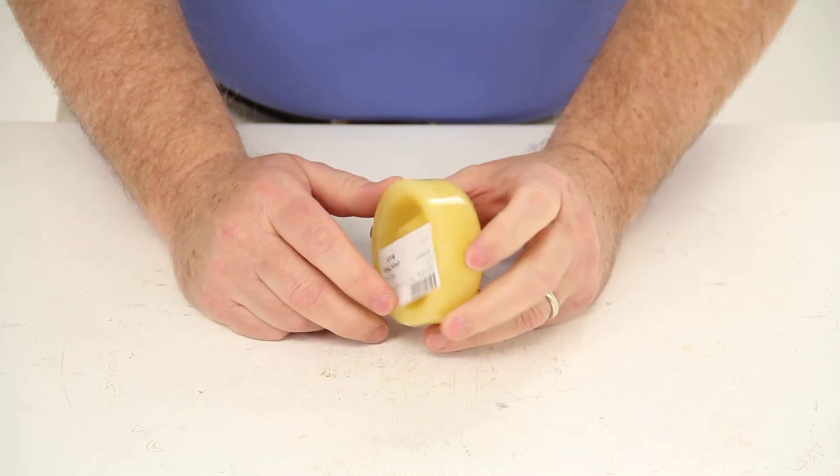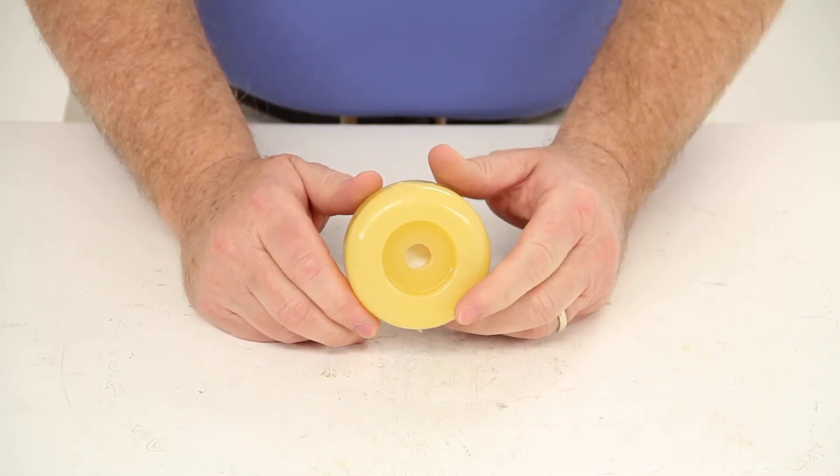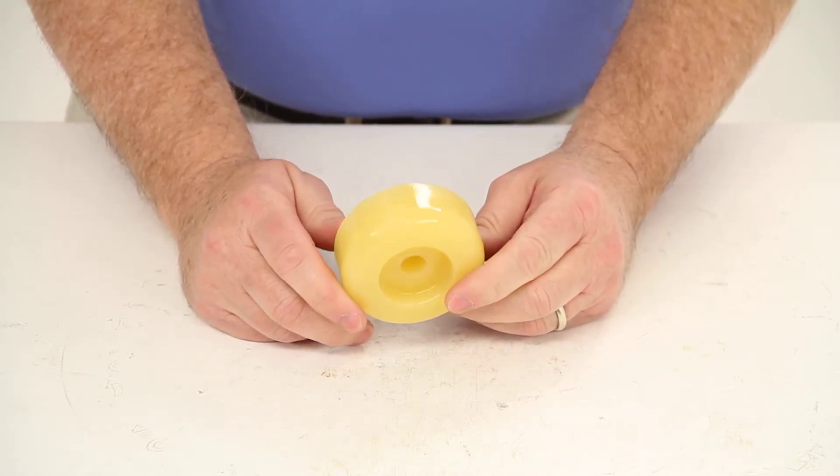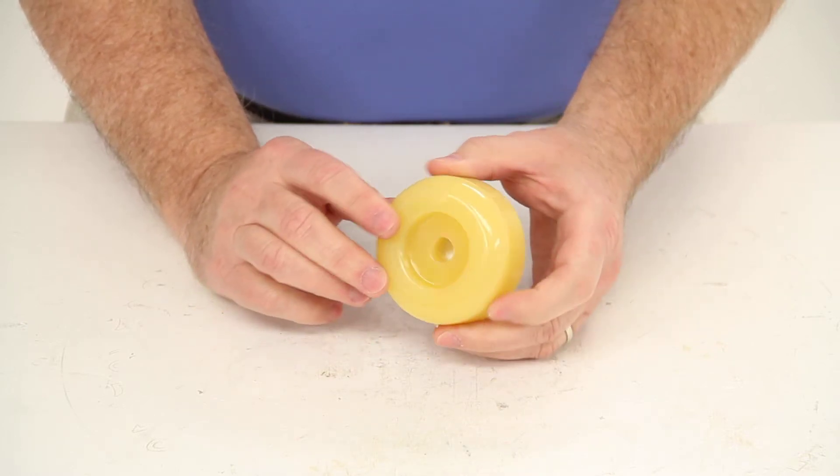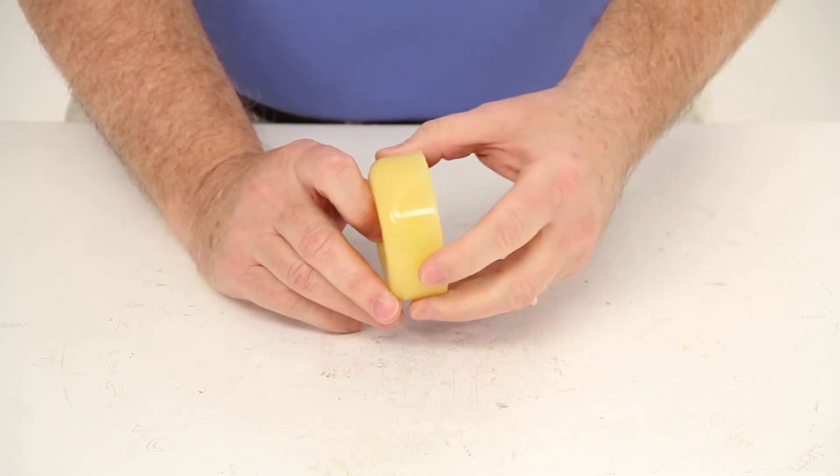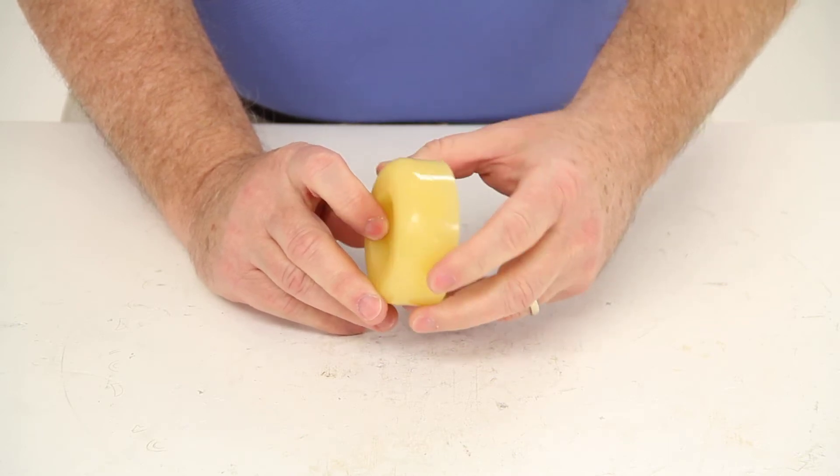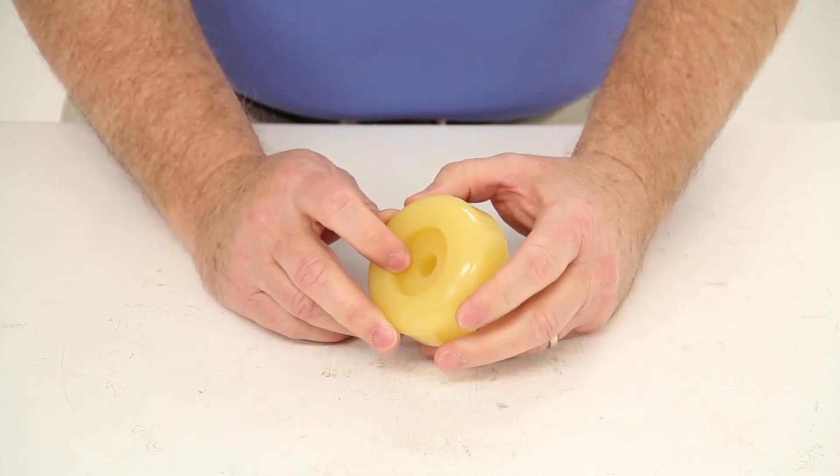This end cap will mount to a keel roller, a spool roller, or a bow roller on your boat trailer. It helps improve the boat to roller contact and will give extra support and guiding capability.